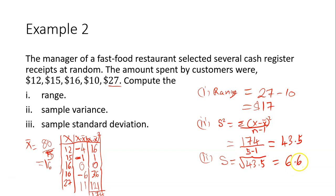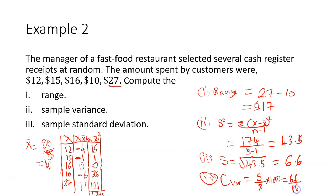In case you're asked to find the coefficient of variation: standard deviation divided by mean, times 100%. The standard deviation is 6.6 and the mean is 16. So 6.6 divided by 16 times 100 gives 41.25%. That's the coefficient of variation. If a question asks for the coefficient of variation, the formula is standard deviation divided by mean times 100%.